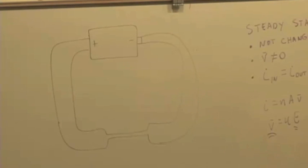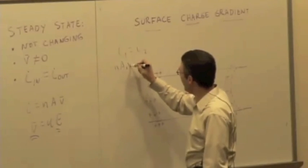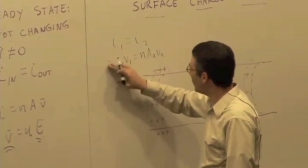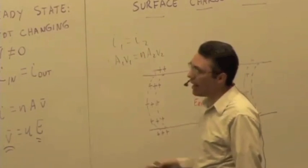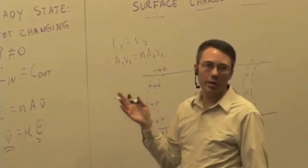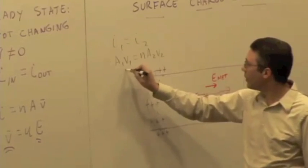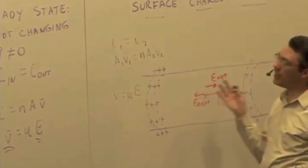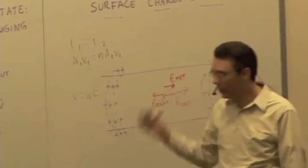Drift speed would be different? Yes, because I1 is equal to I2. So NA1V1 is equal to NA2V2. Drift speeds would be different. And also, therefore, cross-sectional areas are different. One more thing. V equals UE. If the drift speeds are different, then electric fields are different.